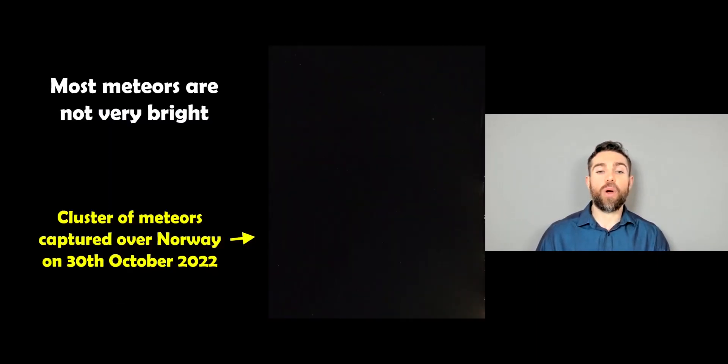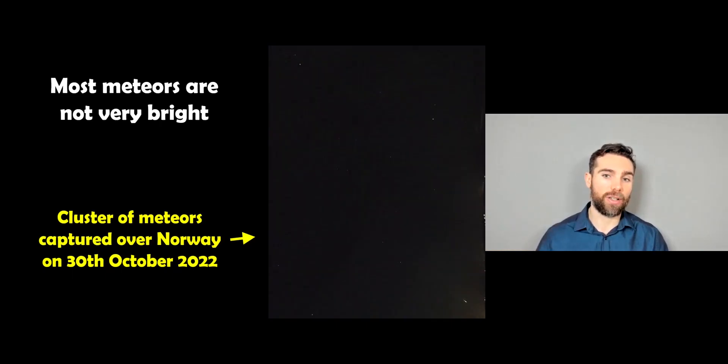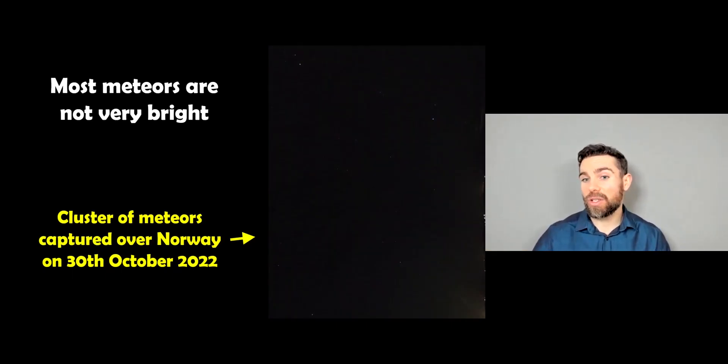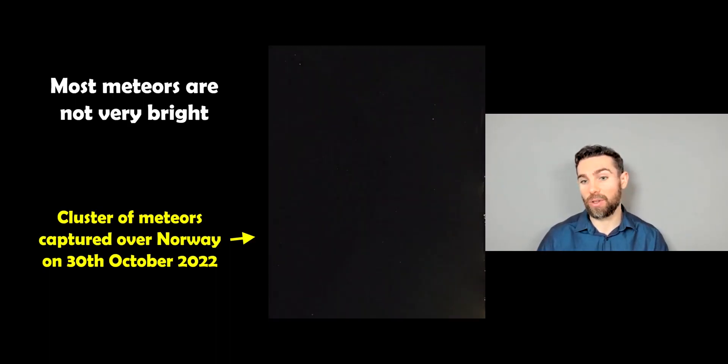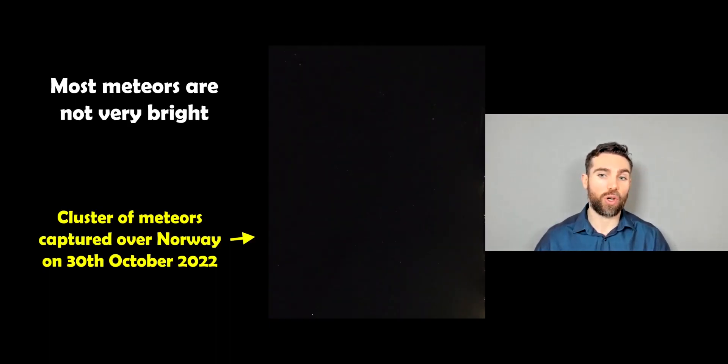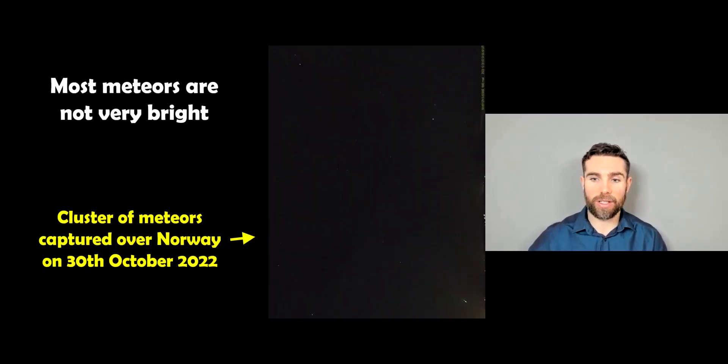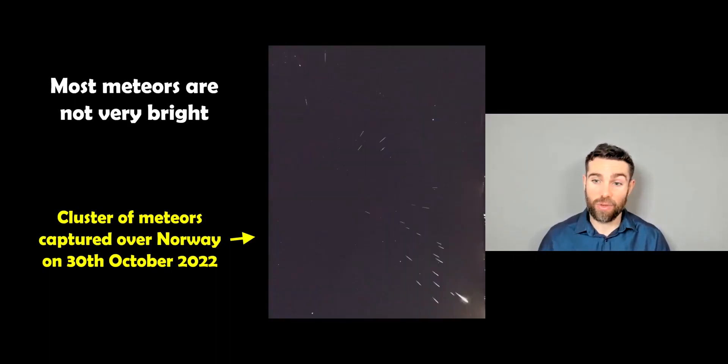So most of these meteors are not particularly very bright. Here you can actually see on the right-hand side there is a cluster of meteors. This was seen in October 2022 over Norway and it was a cluster of relatively small meteors. They're not particularly very bright. They'll only last for a fraction of a second or a second or so. If you've ever seen any yourself, it's normally a very quick streak across the sky and that's it really.